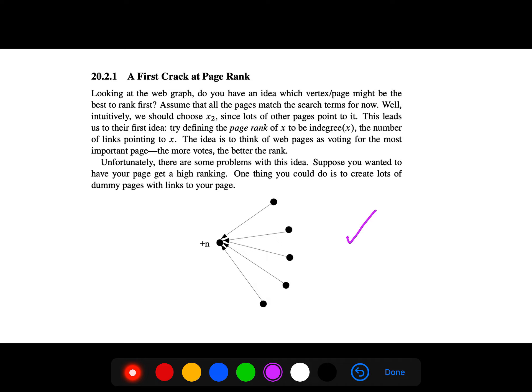The original idea was to define page rank of x to be the in-degree. When we have a directed graph, we have in-degree. But this idea is not working. There are some problems because if you wanted to have your page get a high ranking, you can create a lot of dummy pages. So this doesn't work.